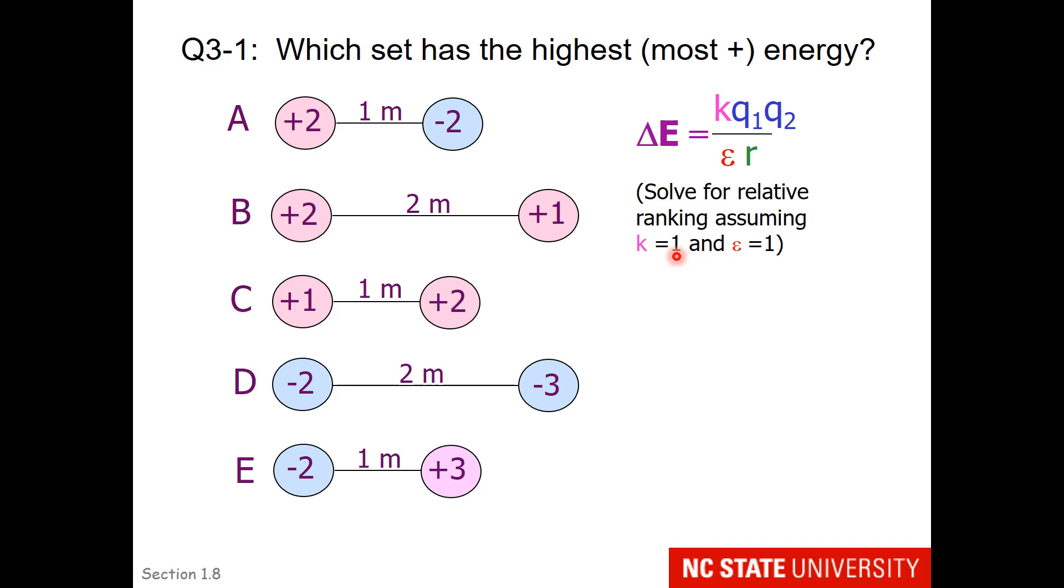And the Coulomb's constant will be the same for all of them, so that also will not affect the ranking. So how would you go about this? Well, I'll give you a little bit of help. For the first one, the energy is going to be plus 2 times a minus 2 divided by 1. So that works out mathematically to minus 4 in the relative ranking.